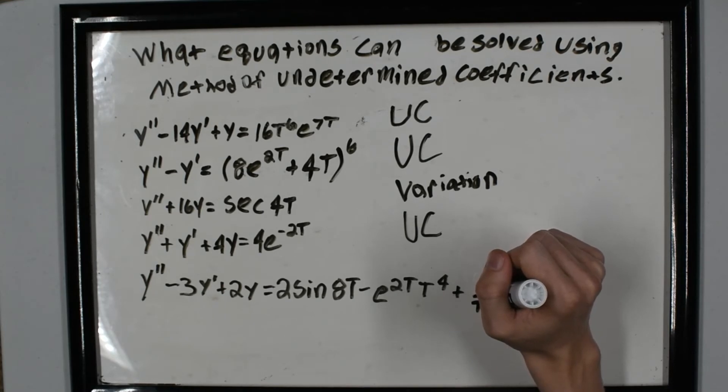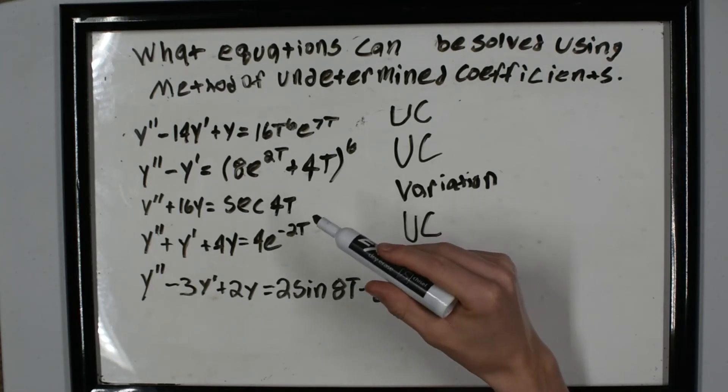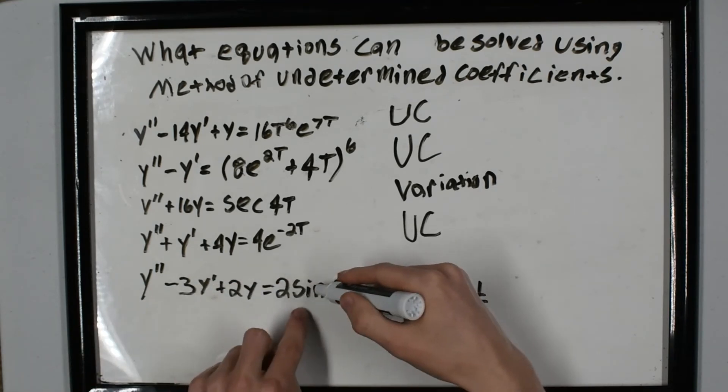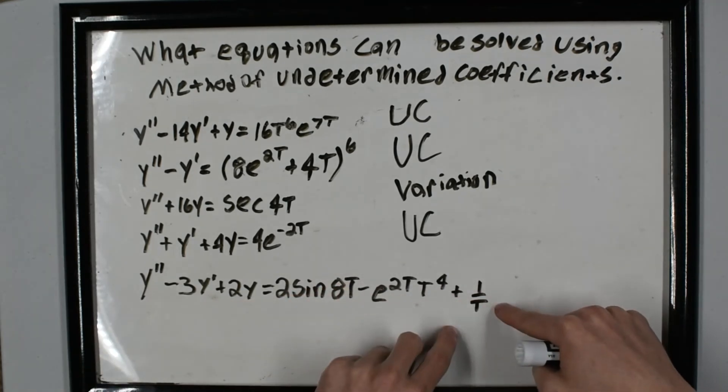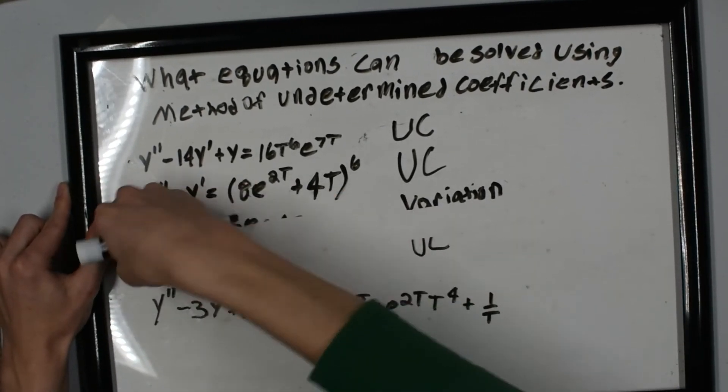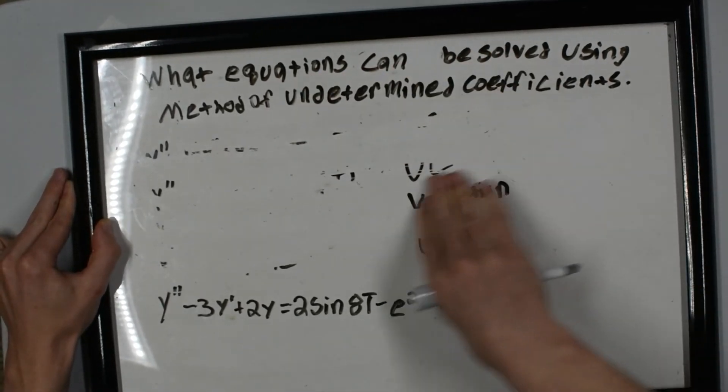If you don't remember what superposition is, it means we could say this equation is the same as the left side equals this, the left side equals this, and break it up into three different equations. Let me move this out of the way so I can illustrate that.